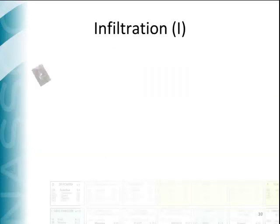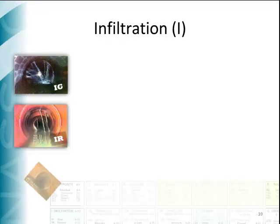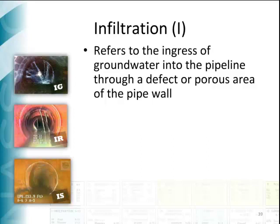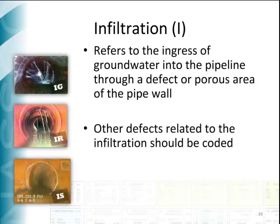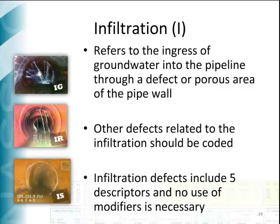Infiltration is another operation and maintenance defect group. It refers to the ingress of groundwater through sewers through the defects or porous areas. As with roots, it is often used in conjunction with other defect codes. However, if the defect is not visible or significant enough to code, code only the infiltration. The infiltration group includes five descriptors: stain, weeper, dripper, runner, and gusher. The images on the left show different types of infiltration, such as IG for gusher, IR for runner, and IS for stain.